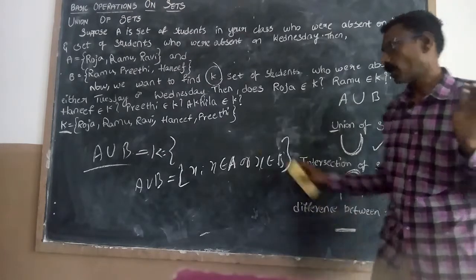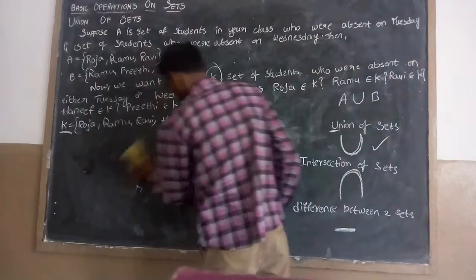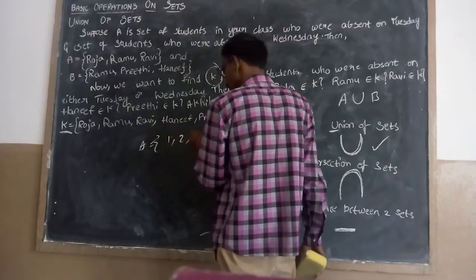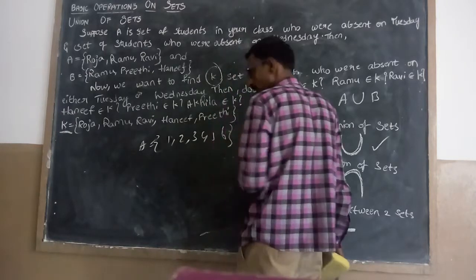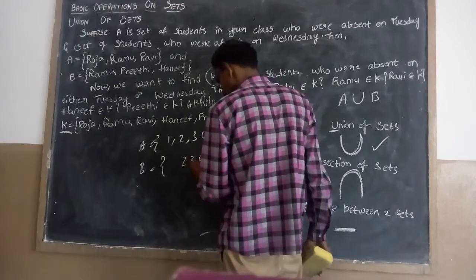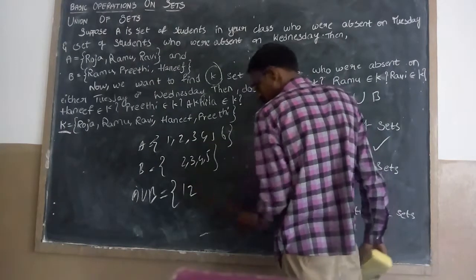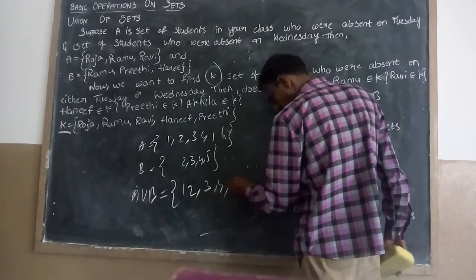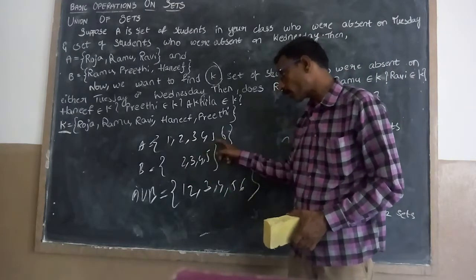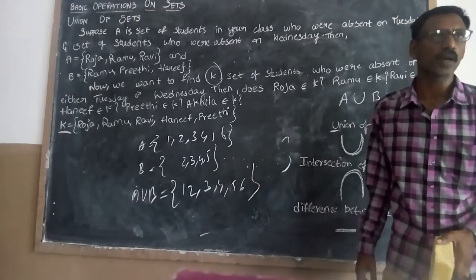Now let's understand what is union with another example. Suppose A equals 1, 2, 3, 4, 5, 6 and B equals 2, 3, 4, 5. I would like to make A union B. The answer is 1, 2, 3, 4, 5, 6 — that's all. Here 2, 3, 4, 5 are repeated two times but you should take each only once.